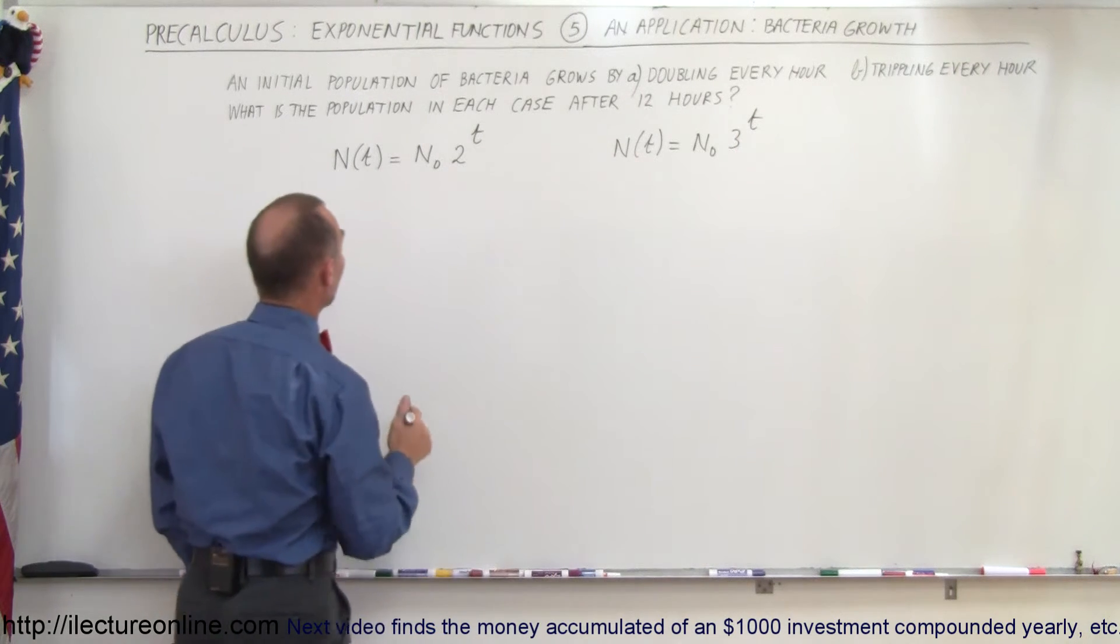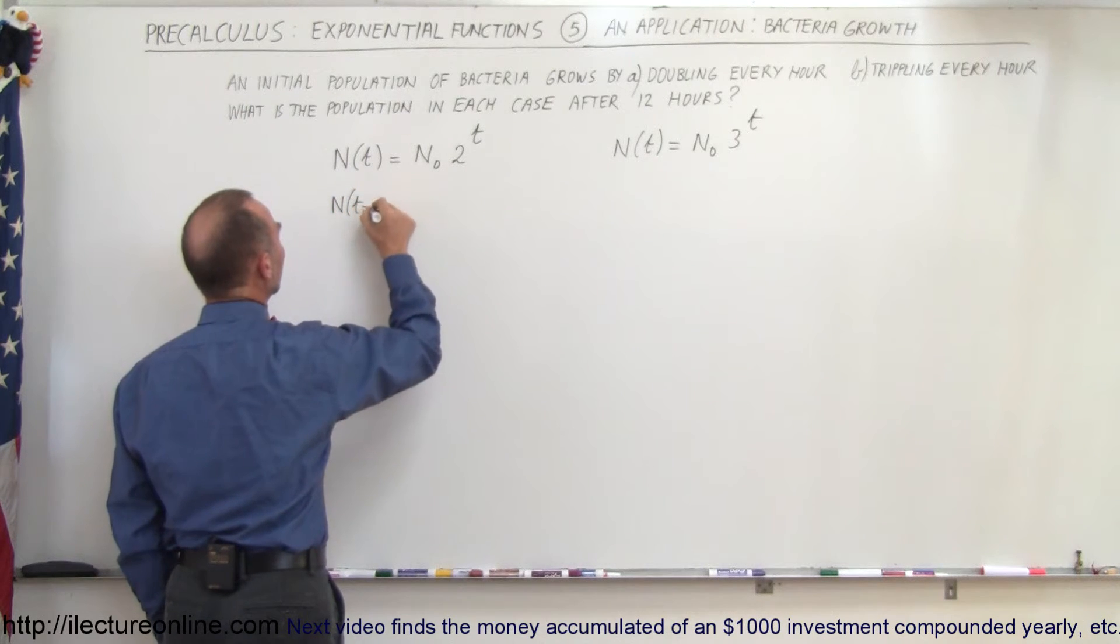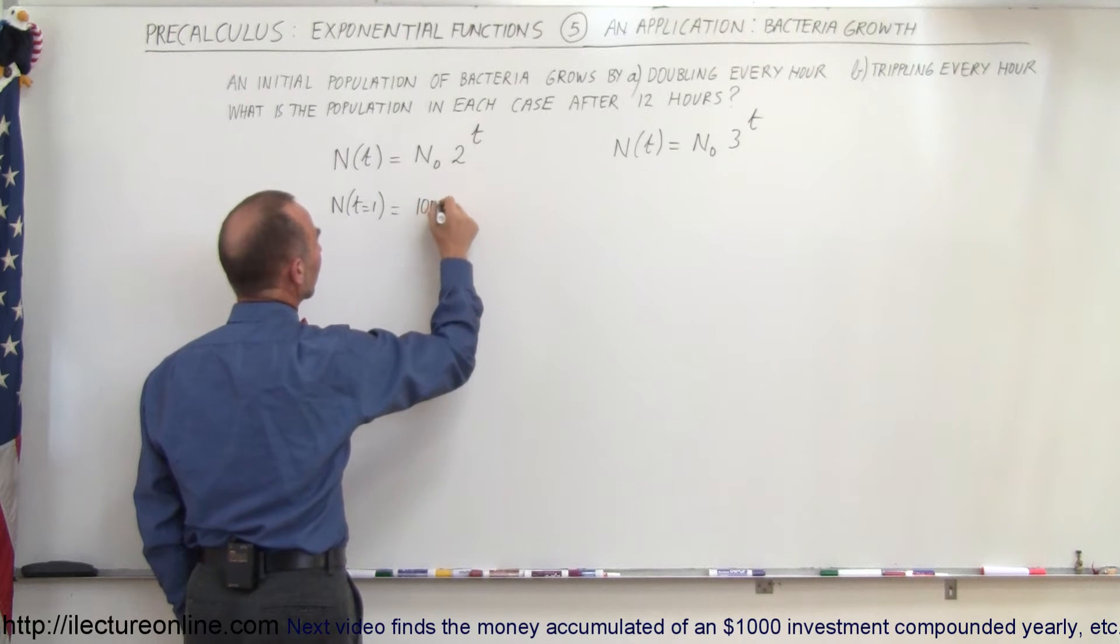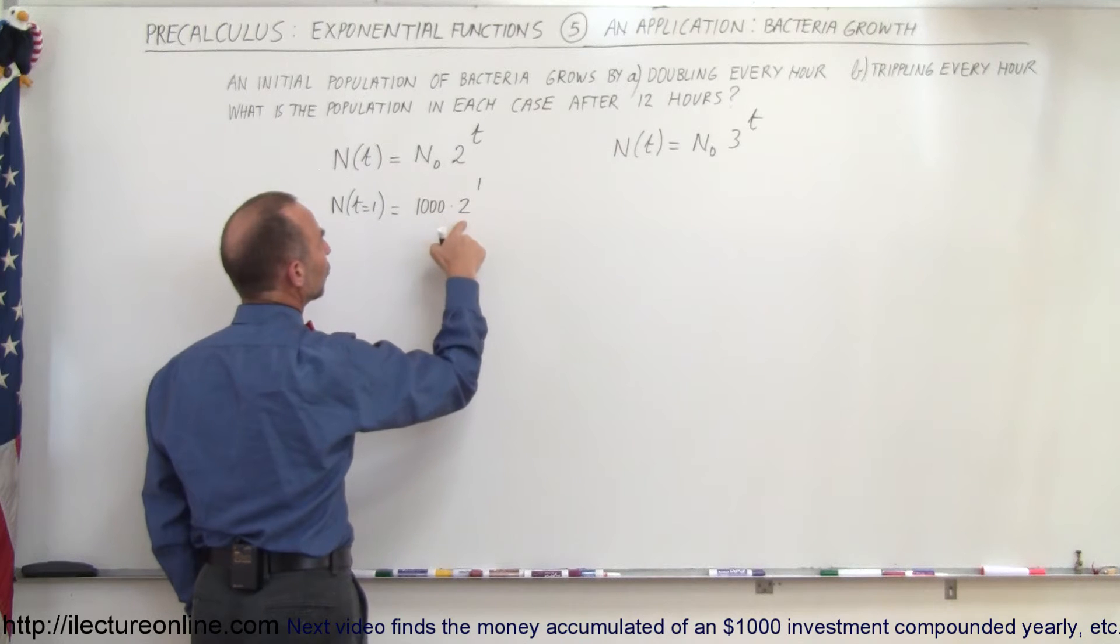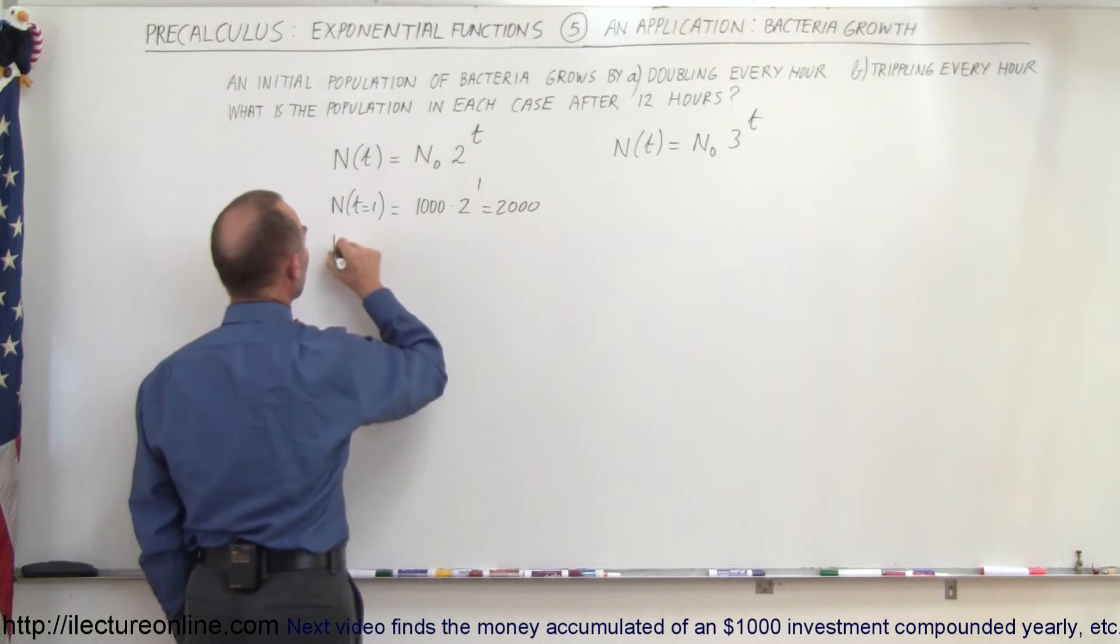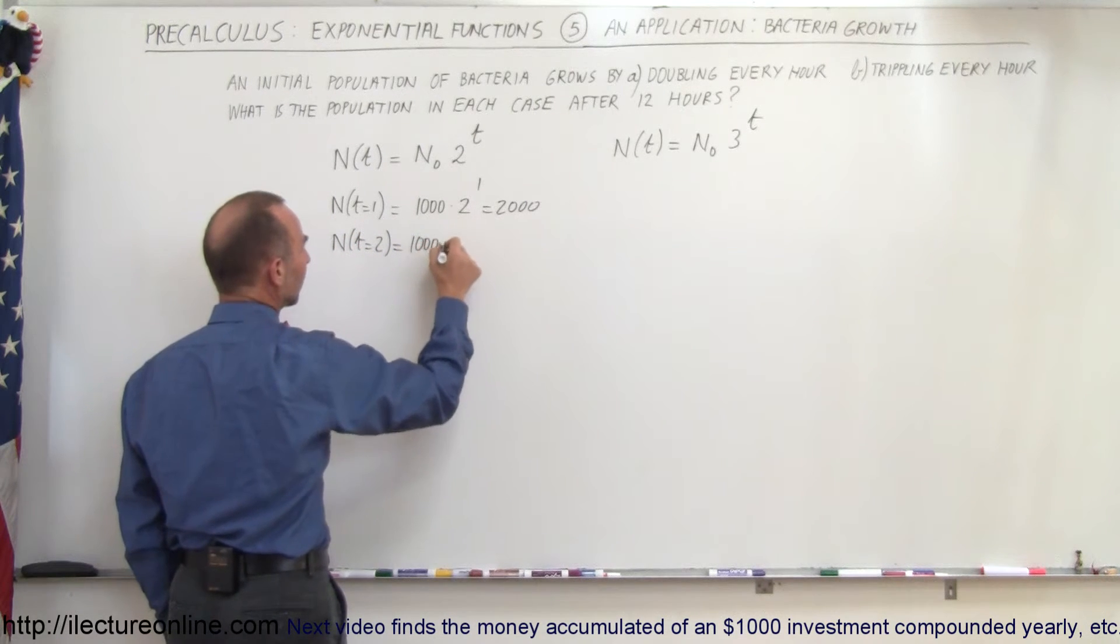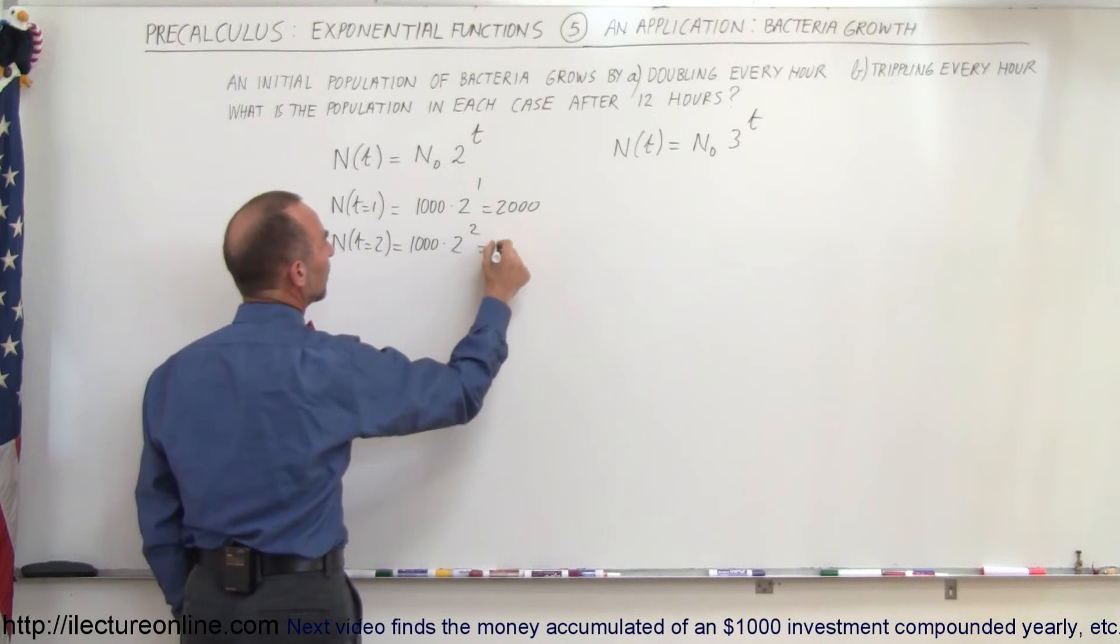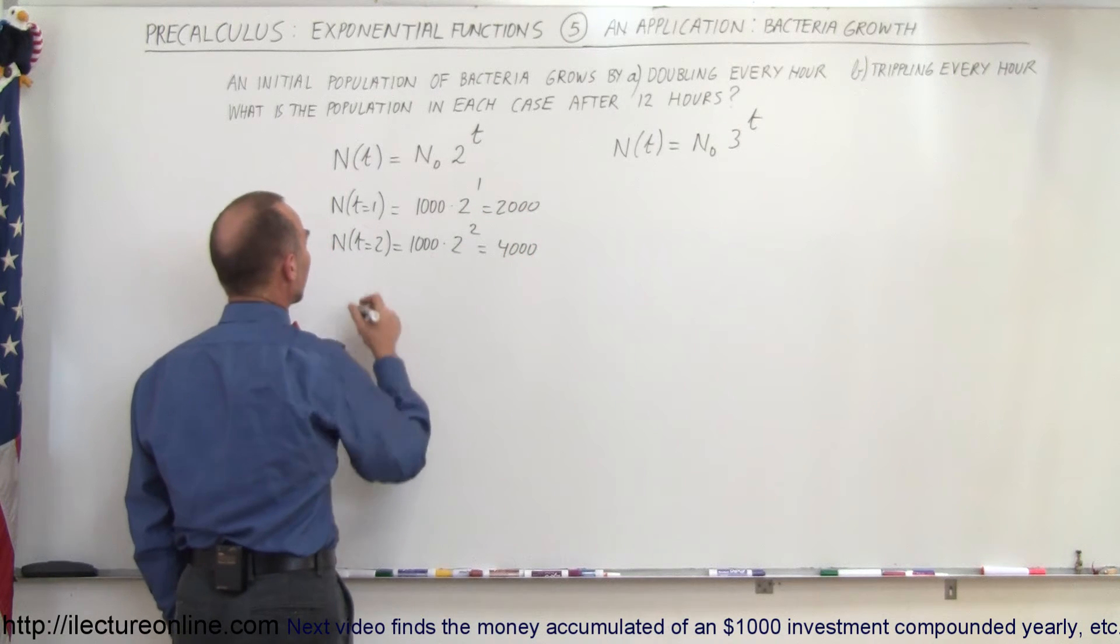Now let's put in some numbers to see what happens. N(1) equals the initial amount, which we started with 1000, times 2 raised to the first power. That would be 2 times 1000, which is 2000. When time is two hours, we start with 1000 times 2 raised to the second power. 2 to the second power is 4, so that equals 4000. You can see that it doubles after another hour.